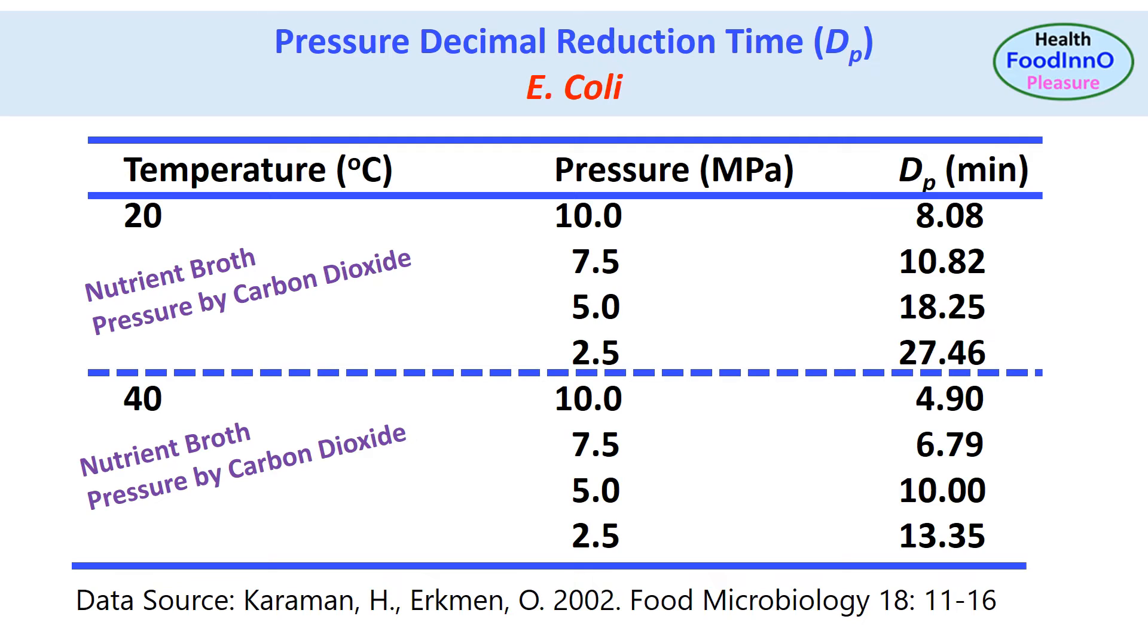First, we can study the effect of temperature at constant pressure. For example, at 10 MPa, DP values are 8.08 minutes and 4.90 minutes at 20 and 40 degrees C respectively. Therefore, microbial resistance decreased when we increased temperature from 20 to 40 degrees C. Similarly, at 2.5 MPa, microbial resistance decreased from 27.46 minutes to 13.35 minutes. We can observe that temperature and resistance are inversely related.